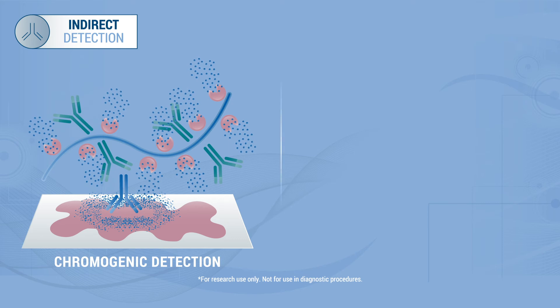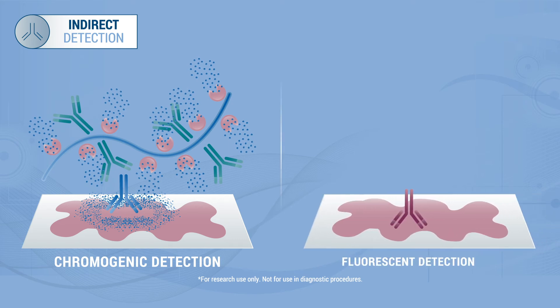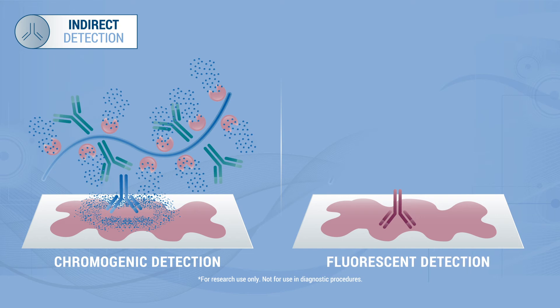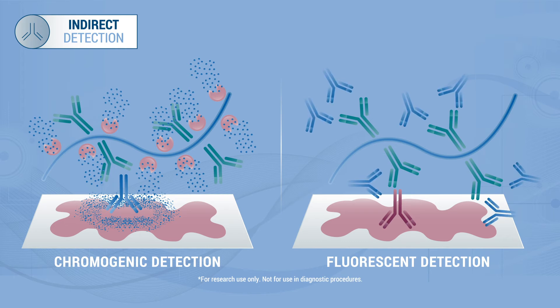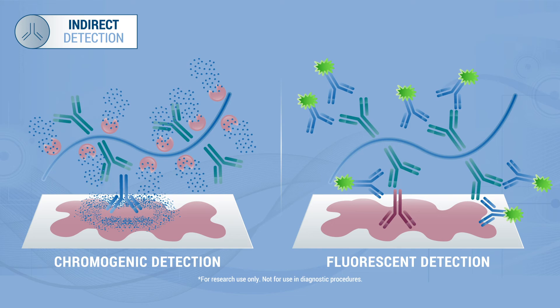For immunofluorescence, primary antibodies are detected with a non-biotinylated amplifier antibody linked to a polymer backbone, to which multiple fluorescent-labeled detection antibodies will bind.